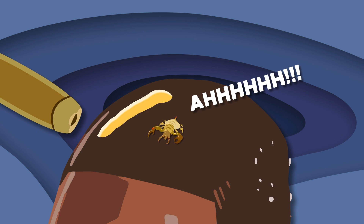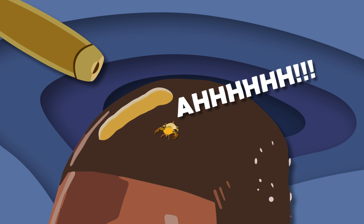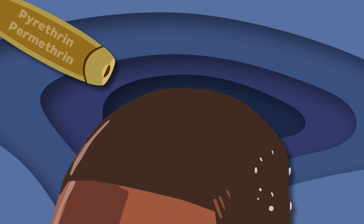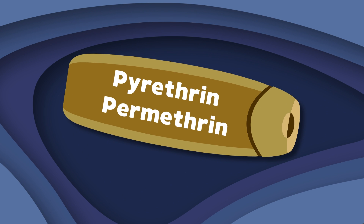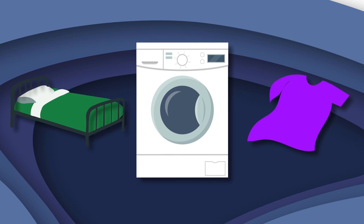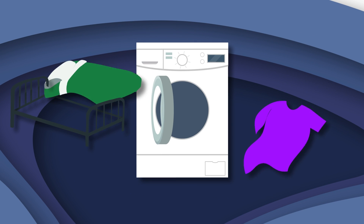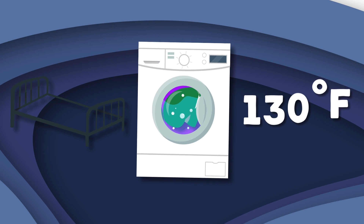Products that contain active ingredients like pyrethrin or permethrin will help get rid of lice on your hair. Wash all bedding and clothing thoroughly, using hot water of at least 130 degrees.